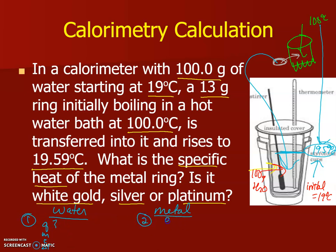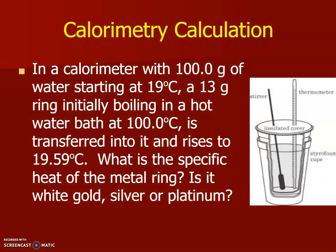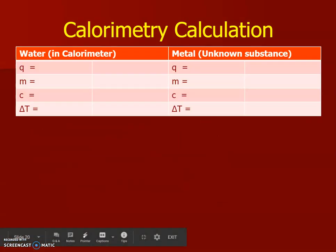And then secondly you're going to do Q, m, c, delta T of your metal, ultimately solving for the specific heat. I always like to split these up into our two parts. Having your water in the calorimeter calculated first, and then secondly your specific heat of your metal.